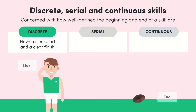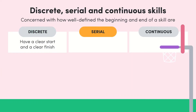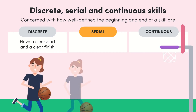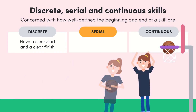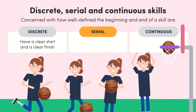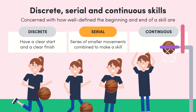Compare that to something like doing a layup in basketball. You're running and dribbling the ball, you pick it up, take two steps, jump, lift the ball, and throw it with the right accuracy and force. This is a serial skill. Serial skills involve a combination of smaller movements in a specific order that are combined together to make a total skill — bring all those movements together and you get a layup.